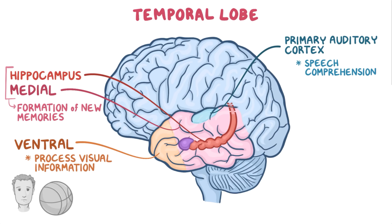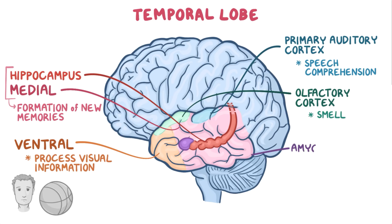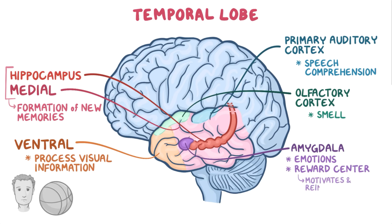Other important structures found within the temporal lobe include the olfactory cortex, which processes the sensation of smell, and the amygdala, which processes emotions. The amygdala also plays a role in the reward center of the brain, which motivates and reinforces behaviors that elicit positive feelings.